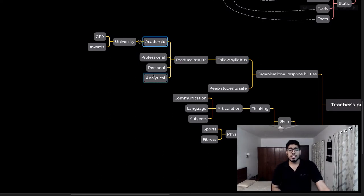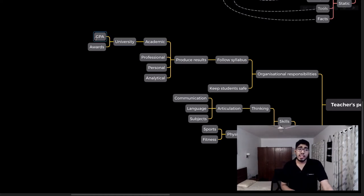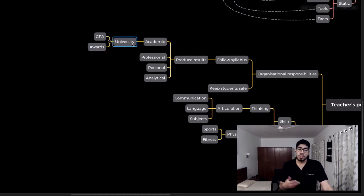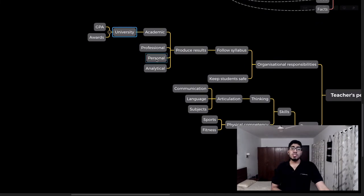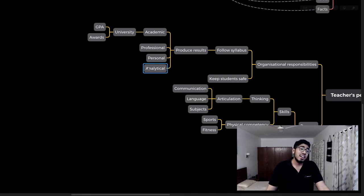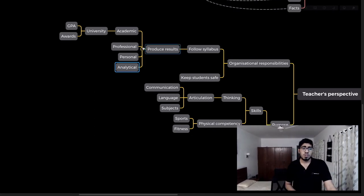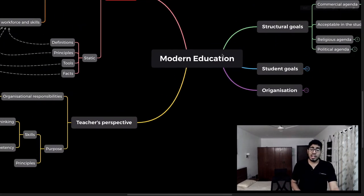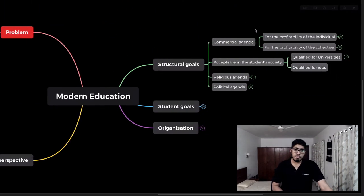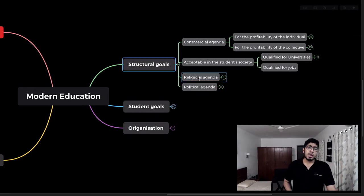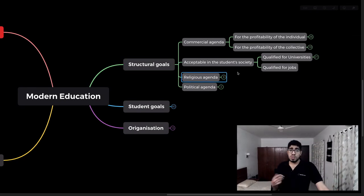Following the syllabus is about producing results. The academic system basically wants to produce GPAs and awards that get students into good universities. Schools also teach personal development, professional development — how to write letters, apply for jobs — and analytical skills.